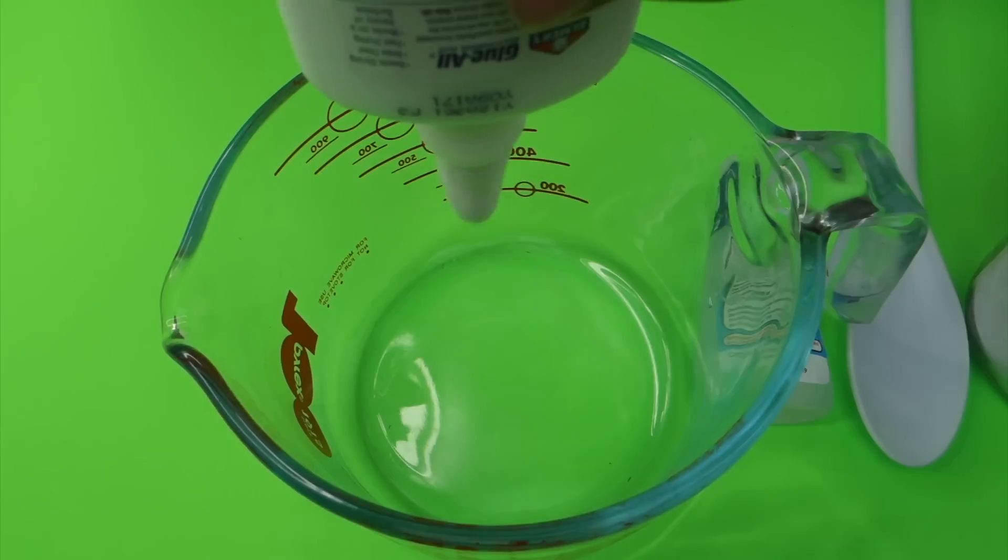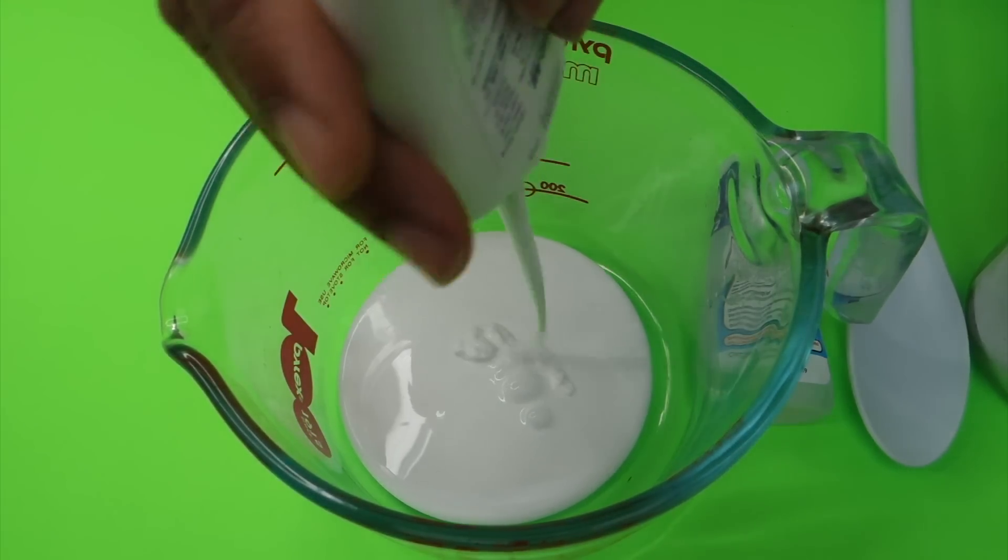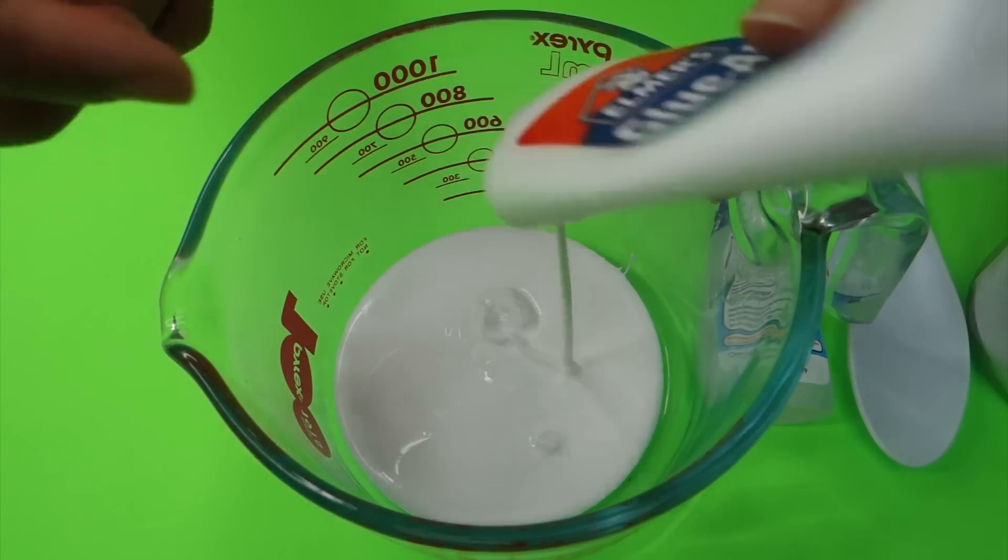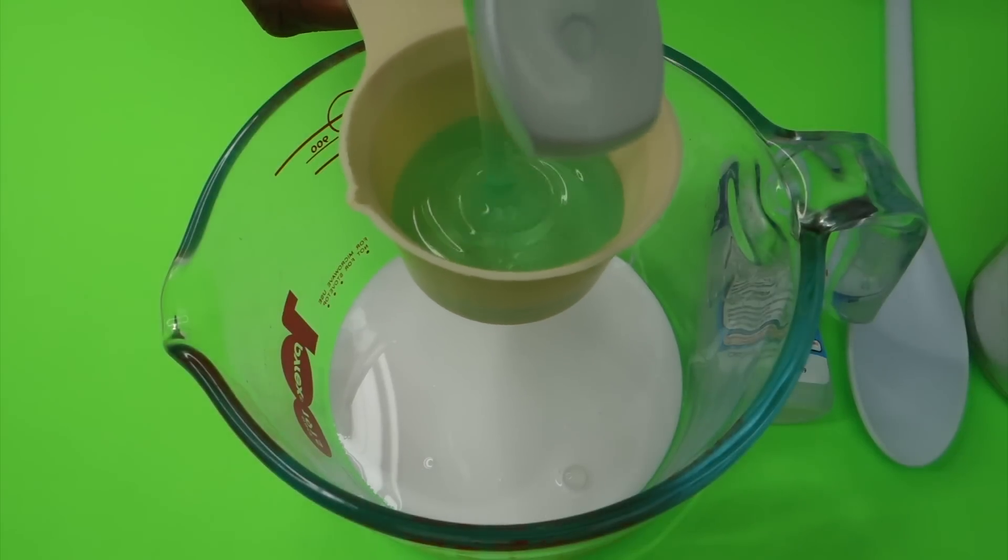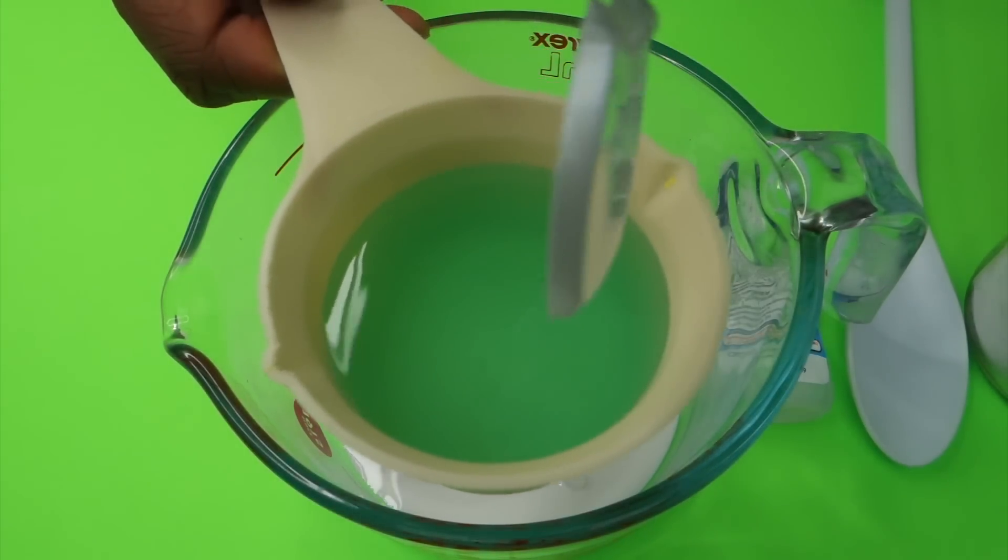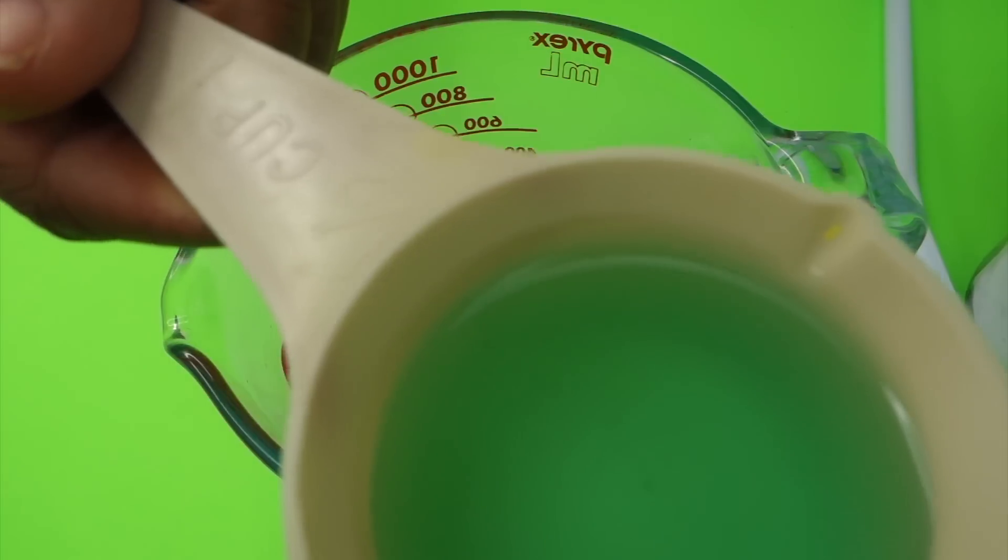So you want to start with four ounces of Elmer's glue. You can use Crazy Art glue, any glue you like. I'm just using Elmer's glue because that's what I had. And then you want to start by using your Clarifying Shampoo. This was like a dollar at Walmart. So you can buy it anywhere. And I'm also using a half a cup of this shampoo.